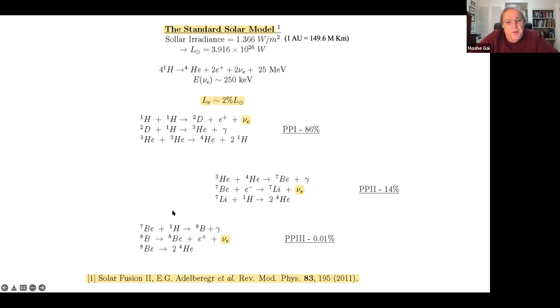Since we have beryllium-7, we can make a fusion reaction to make boron-8. Again, neutrinos are emitted - so we have a third neutrino type.